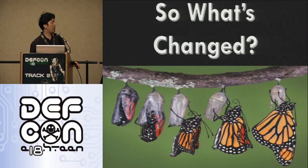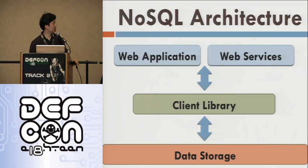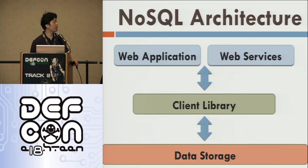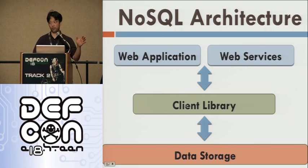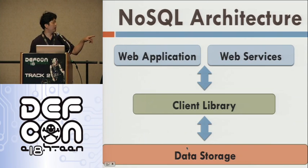So what's changed from the past — from SQL to NoSQL? Here's a typical NoSQL architecture. We have the web application and web services in the front, and in the center is the client library, which the web application and web services interact with. And below is the NoSQL data storage.